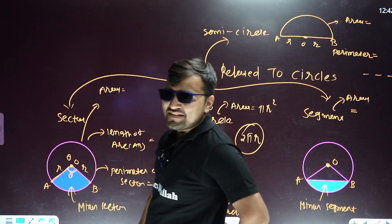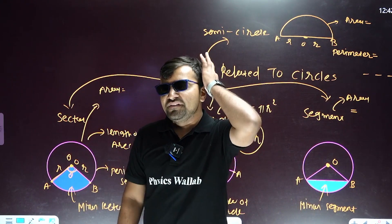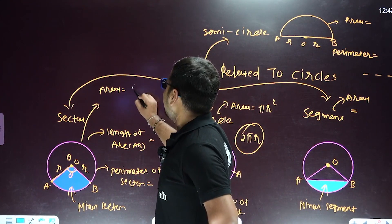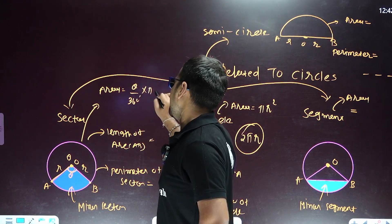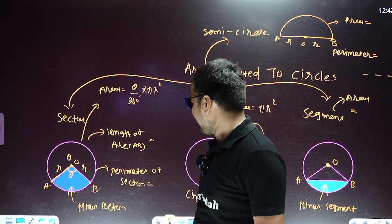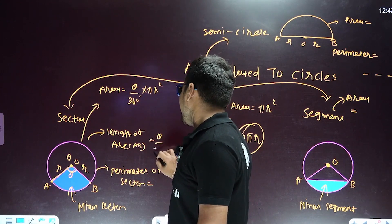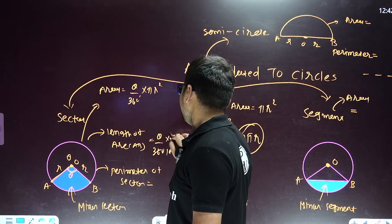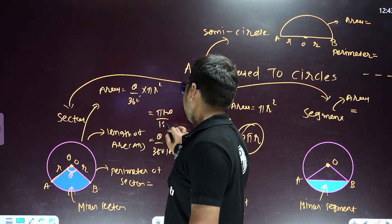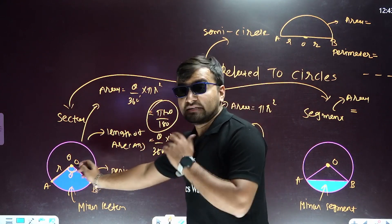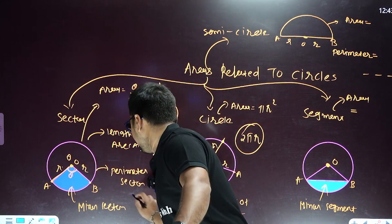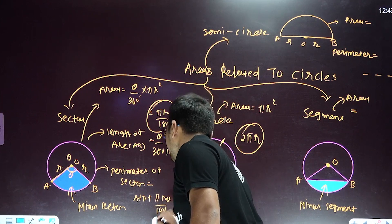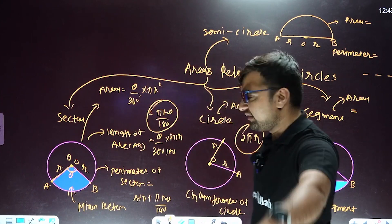The blue part is known as the minor sector and the remaining part is the major sector. The area of the minor sector is theta by 360 degrees into pi r squared. The length of arc equals theta by 360 into 2 pi r, which simplifies to pi r theta by 180. The perimeter of the sector is radius plus radius plus pi r theta by 180, which is the length of arc.